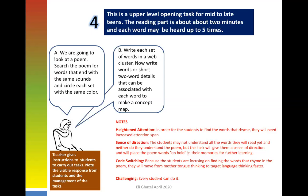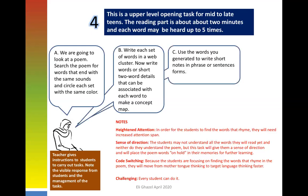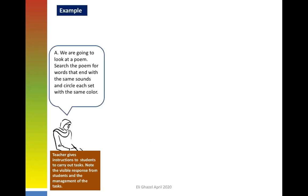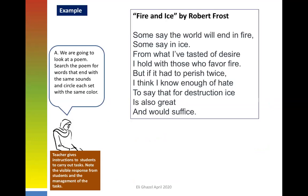Next, write each set of words in a web cluster. Write words or short two-word details associated with each word to make a concept map. Use the words generated to write short notes in phrase or sentence form, then in pairs tell each other. Looking at the poem 'Fire and Ice' by Robert Frost: we circle words ending with the same sound — fire, desire — in one color. Then another set — ice, twice, suffice — in a different color.